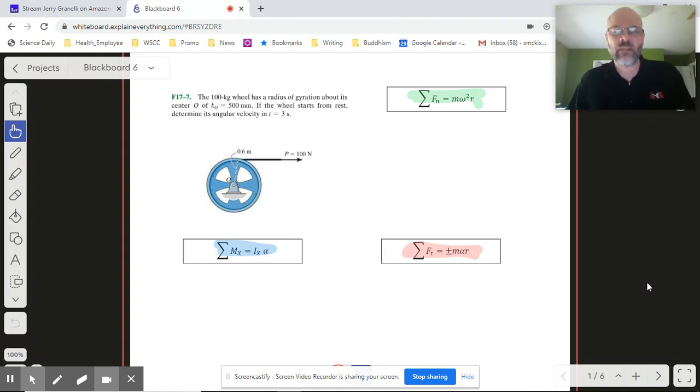Back to the problem at hand. We've got a wheel, and they give us the mass and they give us the radius of the wheel and they give us the radius of gyration. Now we talked about that before but we really haven't done a lot with that, and it's really easy to use.